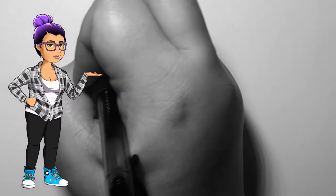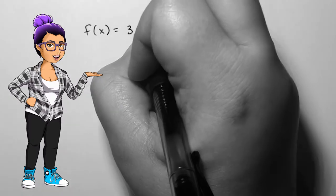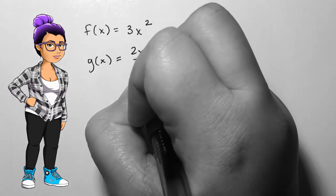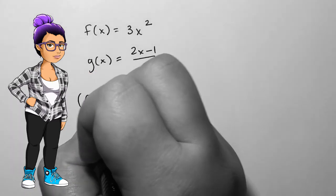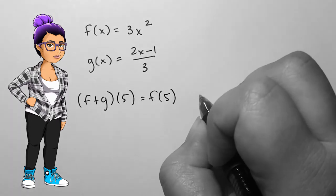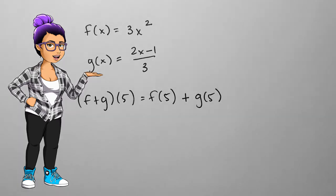If f of x equals 3x squared and g of x equals 2x minus 1 all over 3, then finding f plus g evaluated at 5 means that we need to find f of 5, then find g of 5, and add the two results.